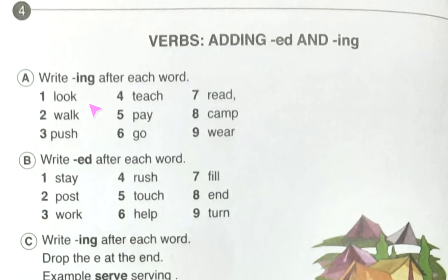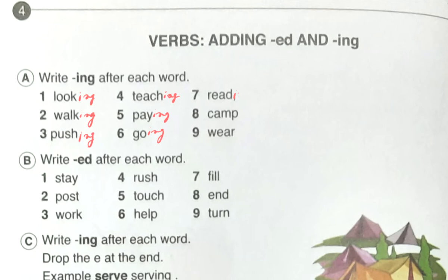First, exercise A: write ing after each word. Here are some words — we will just add ing. Look→looking, walk→walking, push→pushing, teach→teaching, pay→paying, go→going, read→reading, camp→camping, wear→wearing.